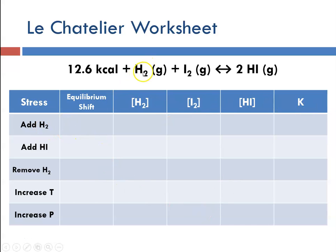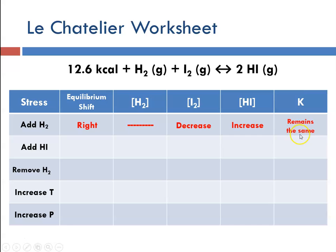If we add hydrogen, which is a reactant, we're going to shift to the right. That means the concentration of iodine will decrease and hydrogen iodide will increase. There is no effect on the equilibrium constant because it's a concentration change.